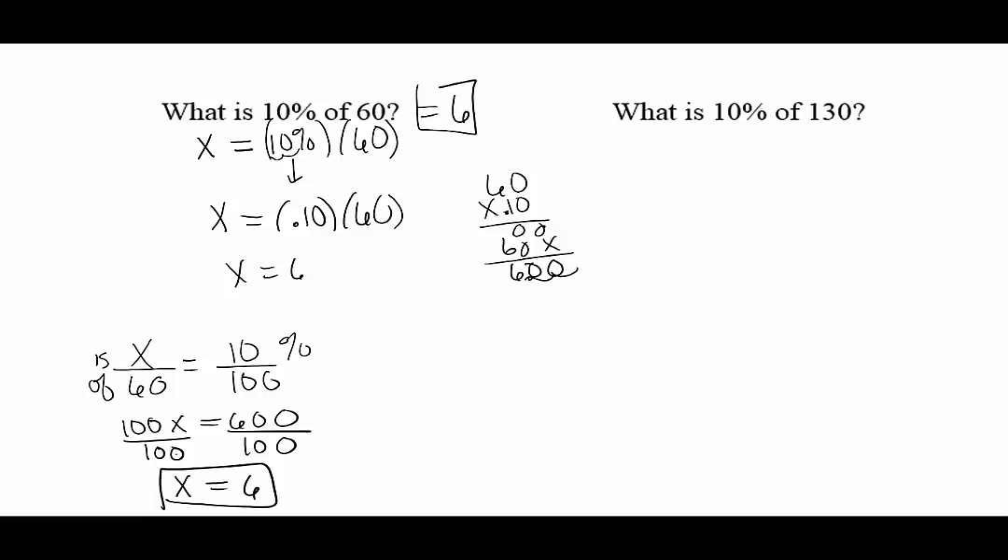What is 10% of 130? So let's take what is 10% written as a decimal of 130. Take 130, multiply by .10 and you get 13. 10% of 130 is 13 and we're starting to notice a pattern.